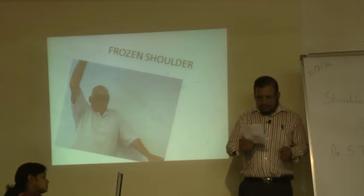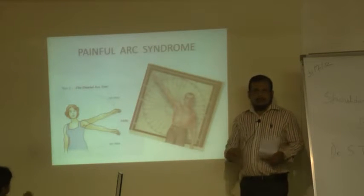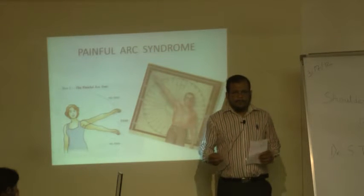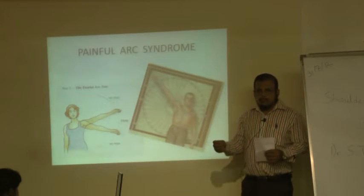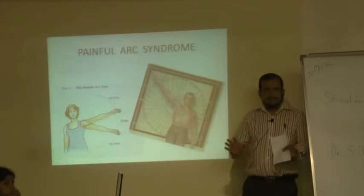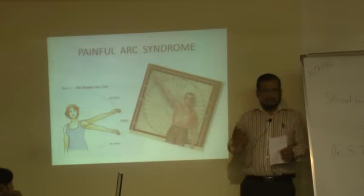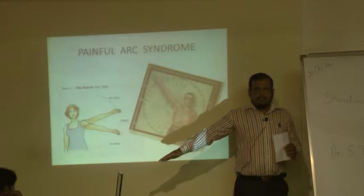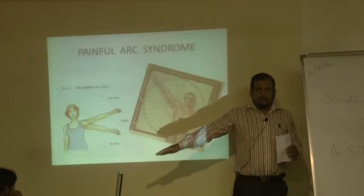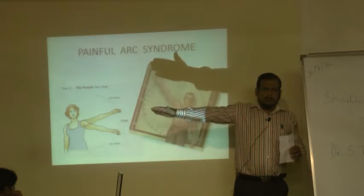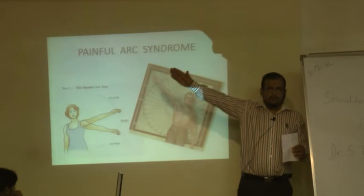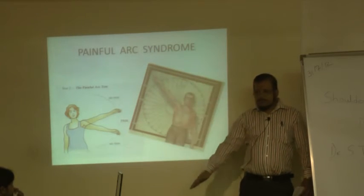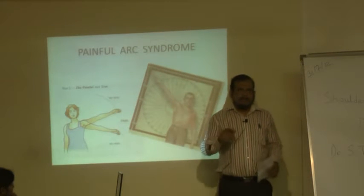The second condition we see is painful arc syndrome. This is not usually spoken about much. In this syndrome, which comprises many painful conditions of the shoulder, very interestingly, as you lift the shoulder from the side there is no pain up till 60 degrees. At 60 degrees the pain starts, becoming more and more painful until about 120 degrees, after which suddenly the pain disappears and the person is able to raise the arm up to the ear easily. This arc from 60 to 120 degrees is known as painful arc syndrome.